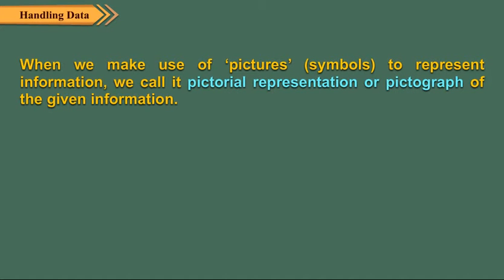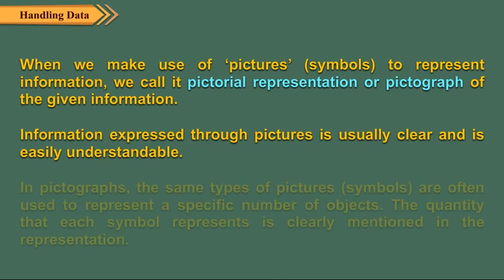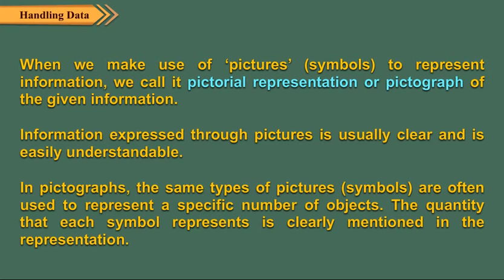Children, when we make use of pictures or symbols to represent information, we call it pictorial representation or pictograph of the given information. Information expressed through pictures is usually clear and easily understandable. In pictographs, the same type of pictures or symbols are often used to represent a specific number of objects. The quantity that each symbol represents is clearly mentioned in the representation.